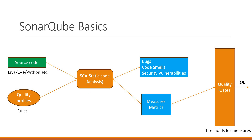SonarQube performs the static code analysis and generates a report. The report contains bugs in the code, maintainability issues (also called code smells), security vulnerabilities, and so on. These are the issues generated in the report by the code quality analysis. In addition to these issues, SonarQube also provides measures and metrics. These metrics are aggregations of the issues in the report — for example, the number of lines of code or the number of code duplications. A measure indicates the value of a metric at a particular instant of time, such as the number of duplications in version v1 of an application. These metrics and measures are useful for measuring code quality.